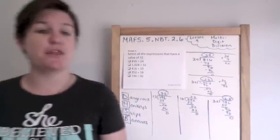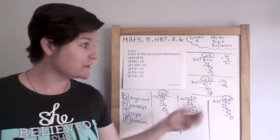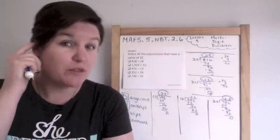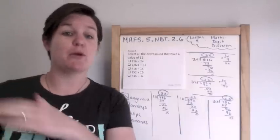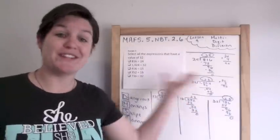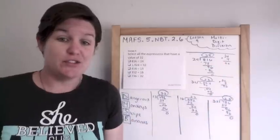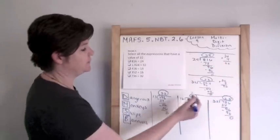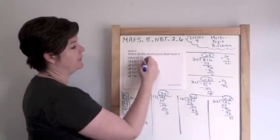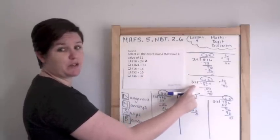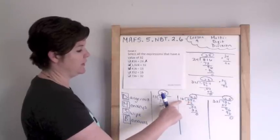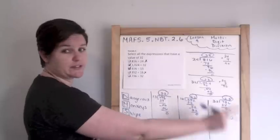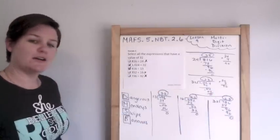So it took me approximately three minutes to solve all of these out. Since your test is going to be timed for most of you, this would be a problem that I might say, oh I know how to do this, but I'm going to wait until after I finish all the other problems. So 816 divided by 24, I got 34, so no. 1,024 divided by 32, I got 32, yes. 416 divided by 13, I got 32, yes. 352 divided by 16, I got 22, no. 736 divided by 32, I got 23, no.